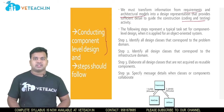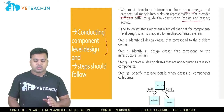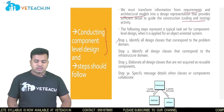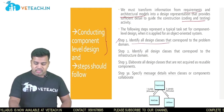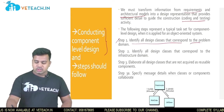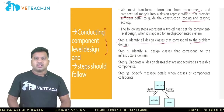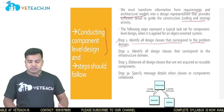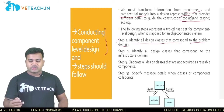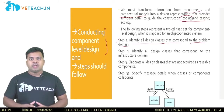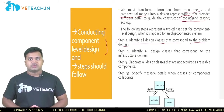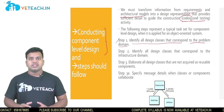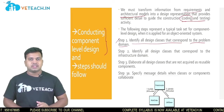We have some steps to follow when designing a component level design. The first step is to identify all design classes that correspond to the problem domain. Before going to the coding stage, you have to identify what requirements and classes you need, and finalize all these things at the initial stage.